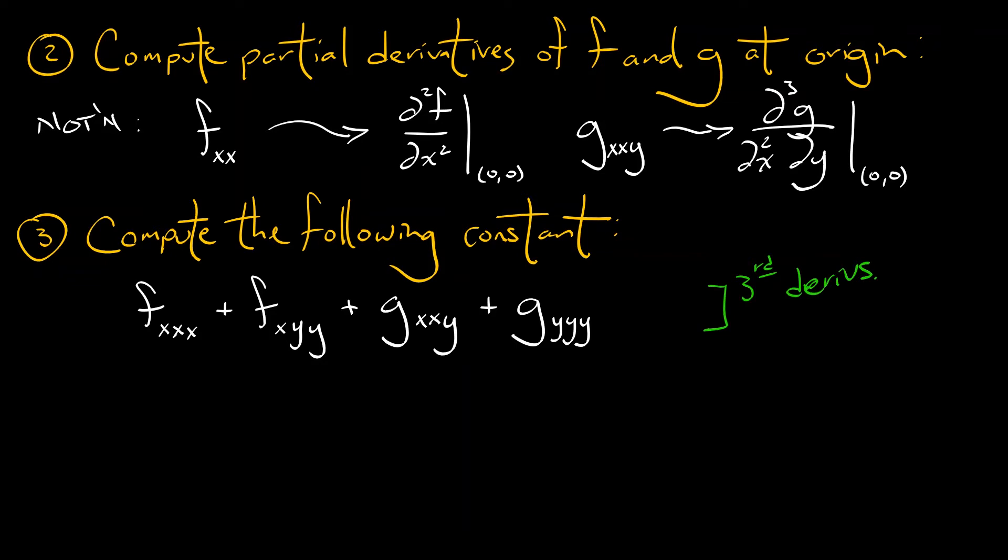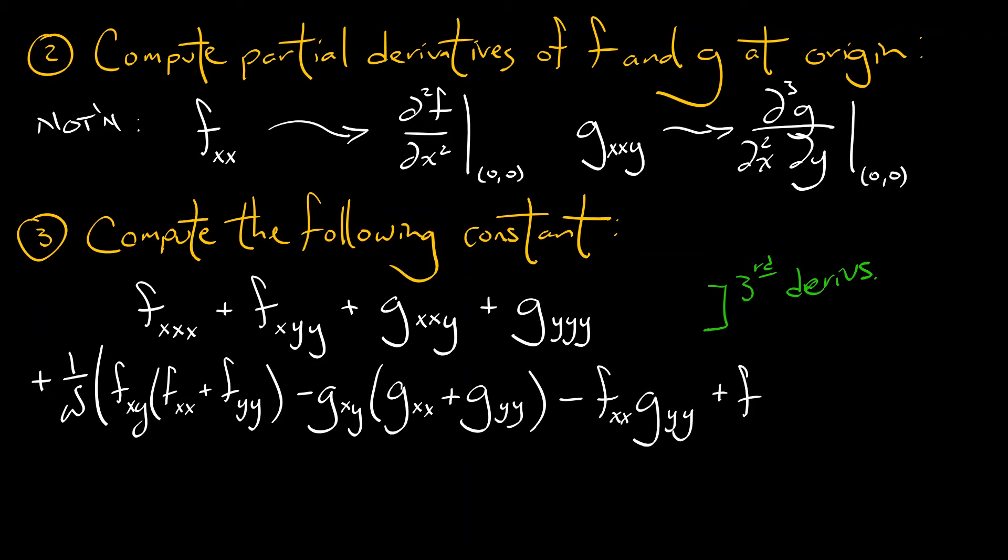But I'm not done. Then what I want you to do is take one over omega, remember omega's from the linear part, times the following quantity. f xy times quantity f xx plus f yy minus g xy times quantity g xx plus g yy minus f xx g yy plus f yy g xx. That is some big conglomeration of second derivatives.